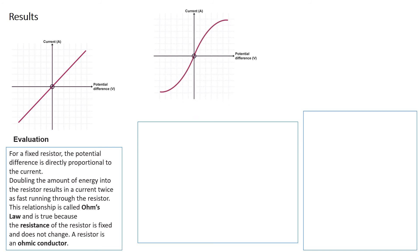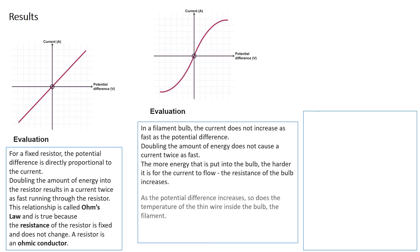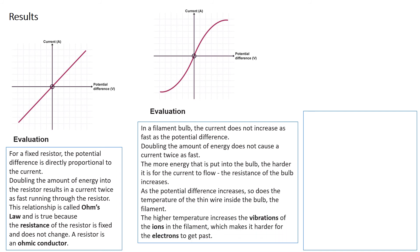Next one - this is my filament bulb, a little bulb where you can see a little glowing wire inside. If you double the amount of energy, it does not cause the current to move twice as fast. The more energy you put into the bulb, the harder it is for the current to flow, and the resistance of the bulb increases as the potential difference increases. So does the temperature of the thin wire inside the bulb. The higher the temperature, the more the ions of the filament vibrate, which makes it harder for the electrons. I want to point out the words that are in bold are what we call eight-nine keywords. If you're looking for an eight or nine, you need to be using those specific words because they are keyword-marked.